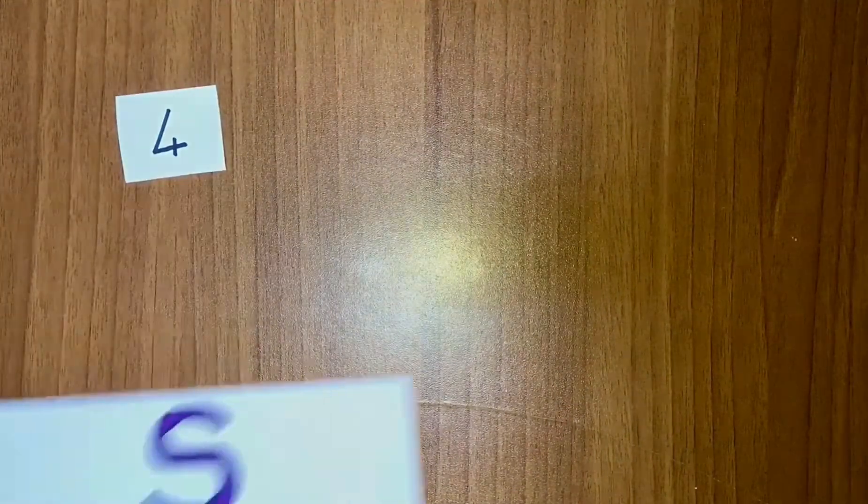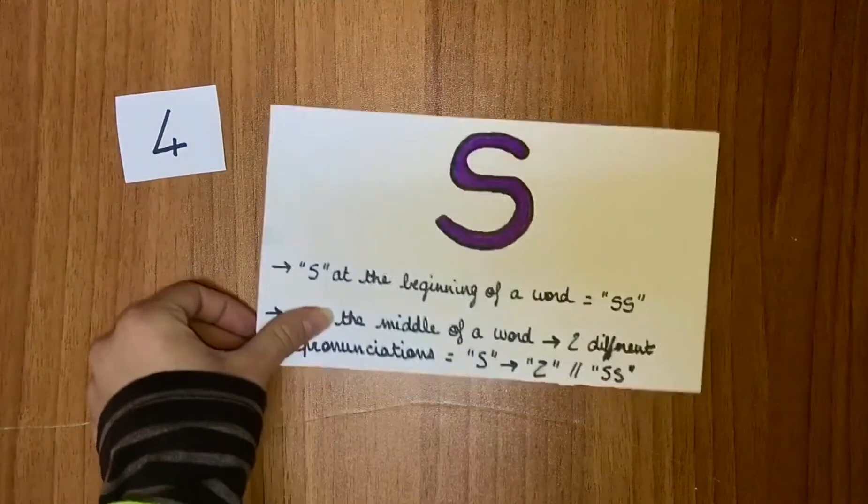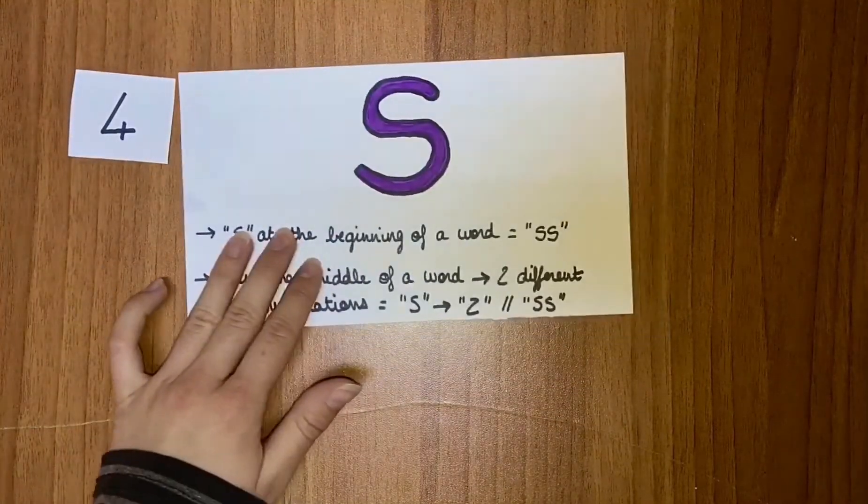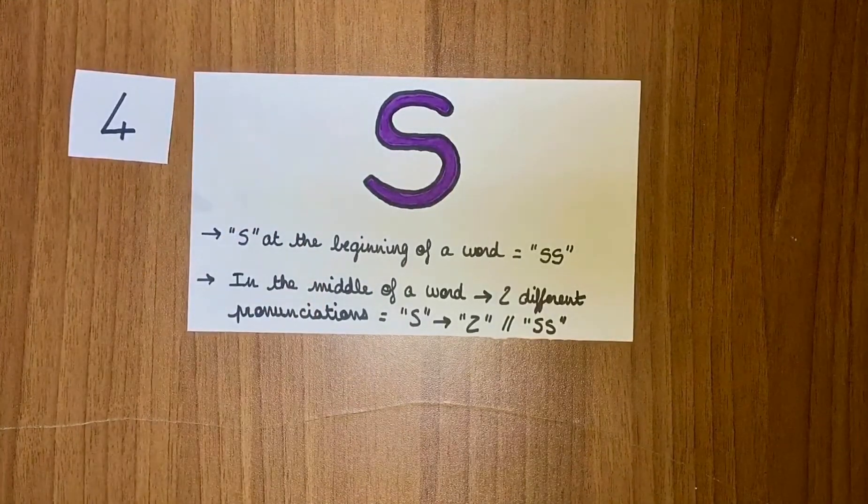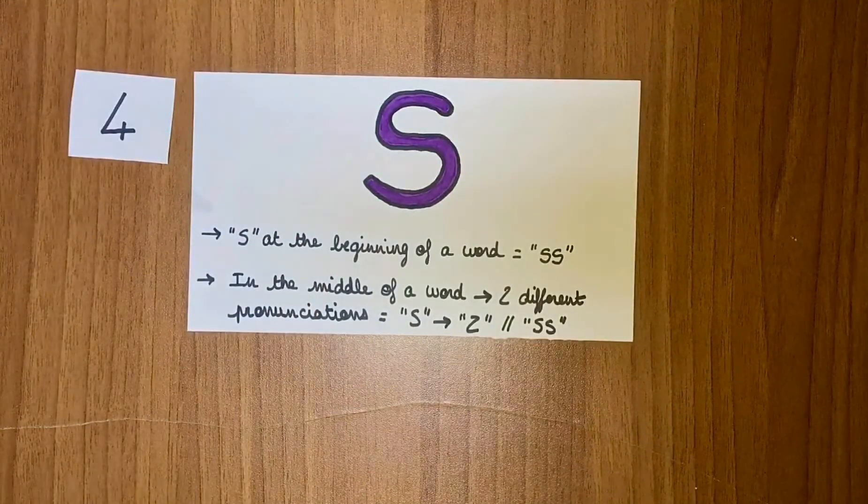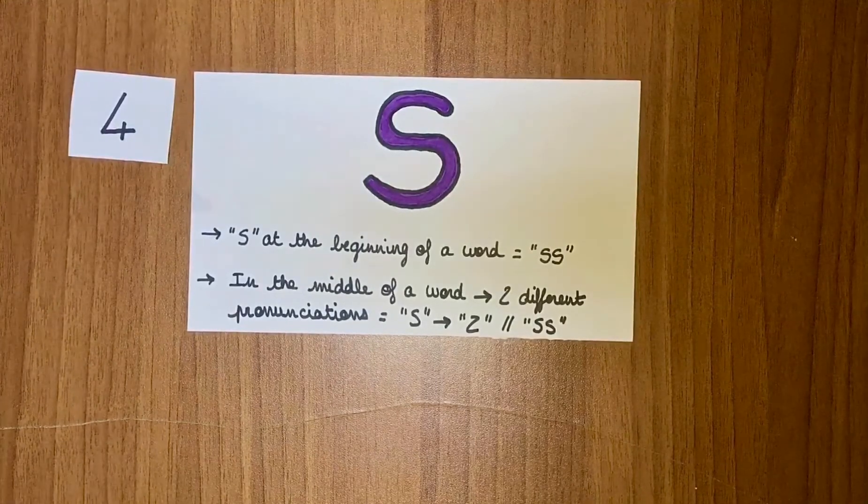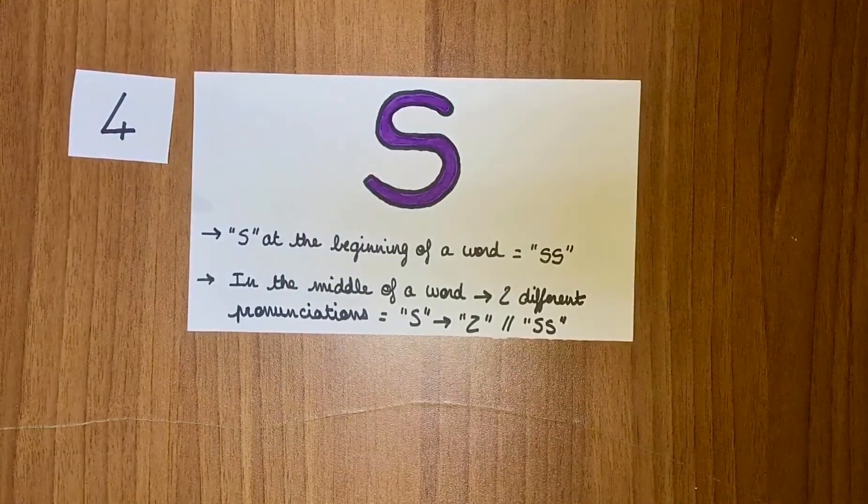And finally, the S in the French language is pretty tricky. At the beginning of words, it will sound like S. But in the middle, there are two cases. If there is just one S, it will sound like Z. But if there are two, it will also sound like S.